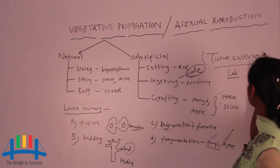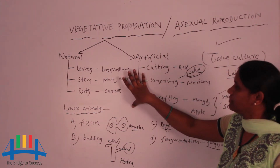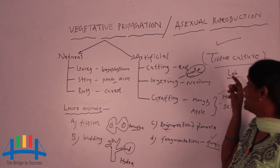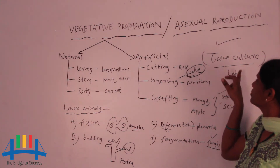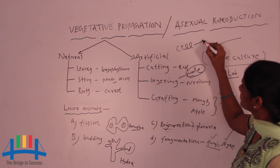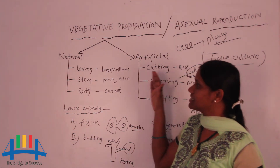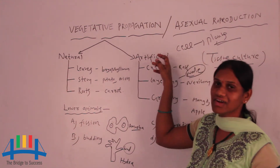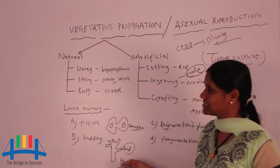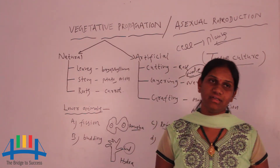One more method is tissue culture, related to producing new hybrids. Tissue culture is carried out only in a lab and applies only to plants, not animals. In tissue culture, one cell produces a number of plants. So in vegetative propagation or asexual reproduction — whether in plants, lower animals, or higher animals — all these processes have been covered.